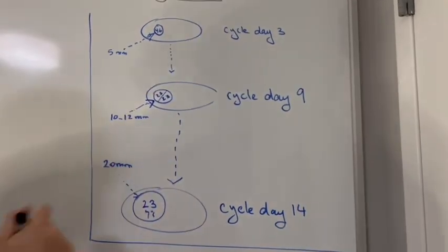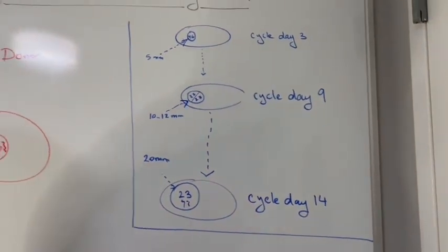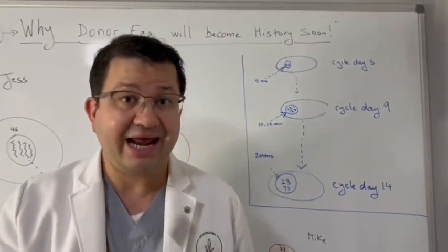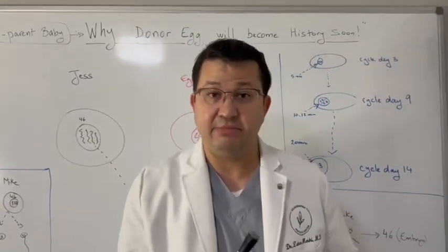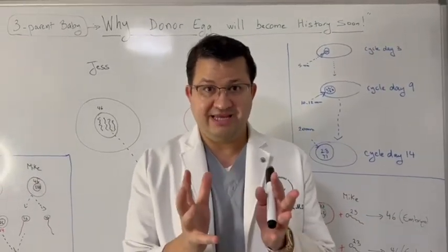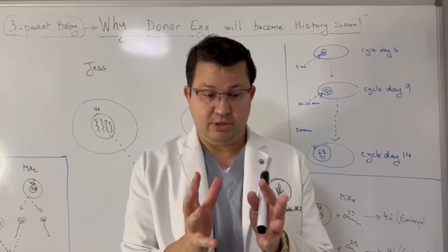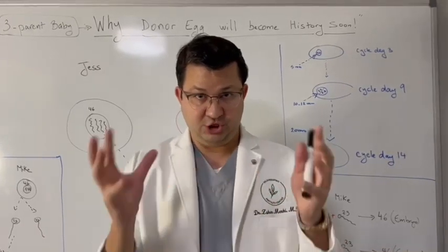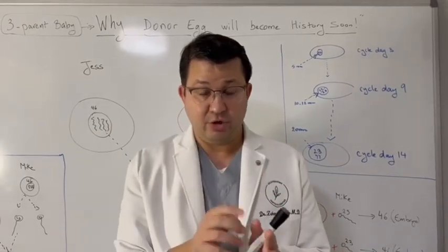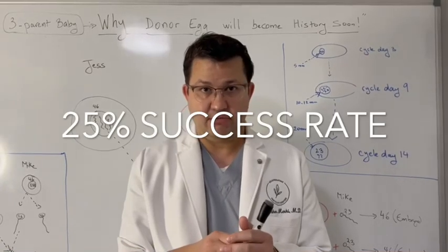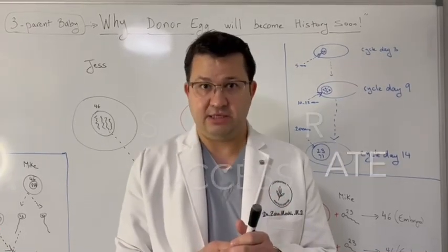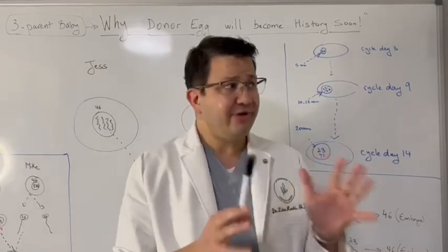But guess what? It's extremely hard for an egg to come out from a 10 to 12 millimeter follicle where the DNA is still 46 chromosomes in order for us to change the white of that egg. However, 25% of the time we are successful in getting these eggs.